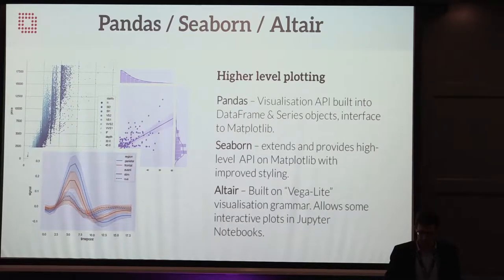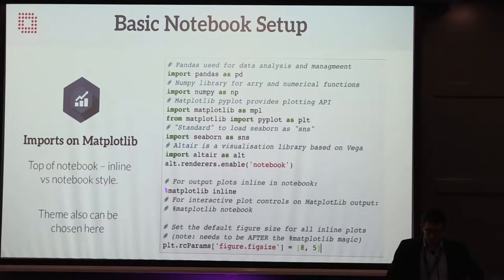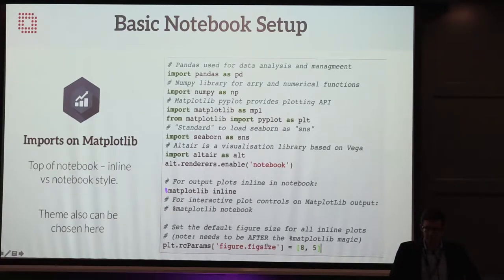In a Jupyter notebook you'll always have a lot of imports at the top to get set up. The standard conventions are: import Pandas as PD, NumPy as NP, Matplotlib as MPL. Seaborn is actually imported as SNS — apparently the author was a big fan of The West Wing and named it after Sam Norman Seaborn, so it got into the code. Import Altair as Alt, and then there are a few setup things: run the Jupyter magic '%matplotlib inline' for graphs to appear in line, and you can set your default figure size.